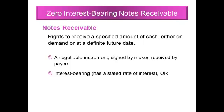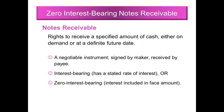There are two types of notes. One is interest bearing, and the other is non-interest bearing. Interest bearing means on the face of the note there is a stated rate of interest. The non-interest bearing note means the interest rate is not specified or written on the face of the note.